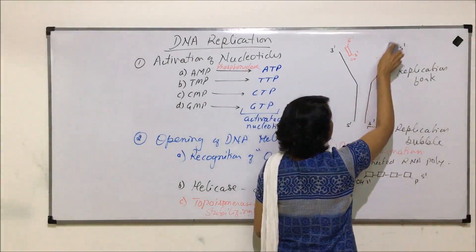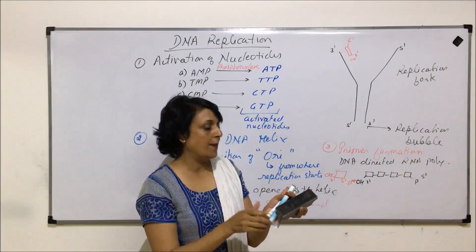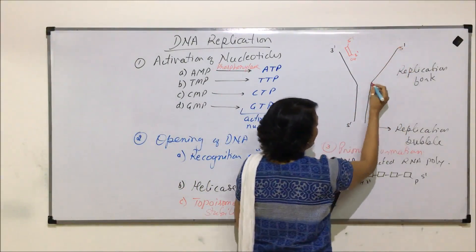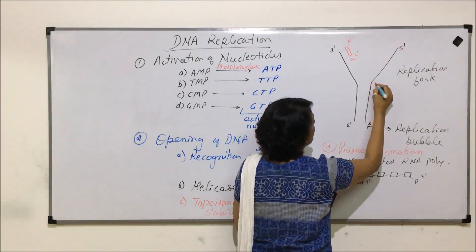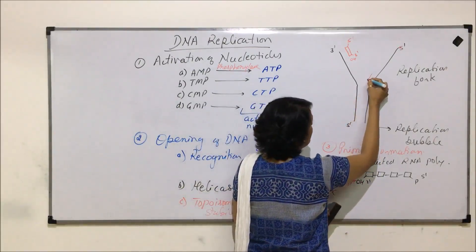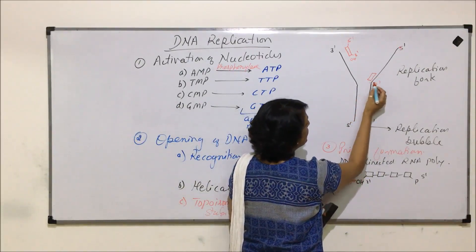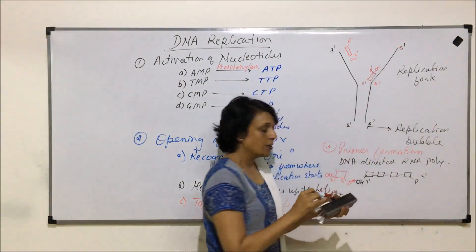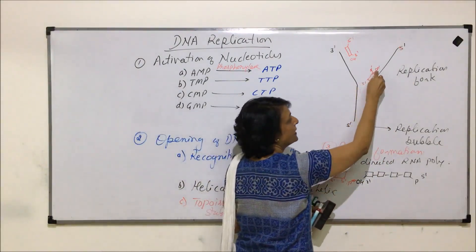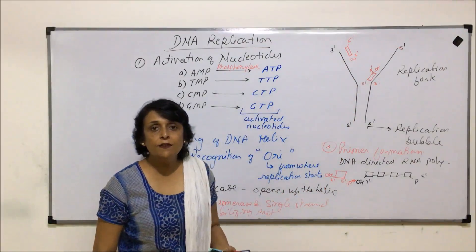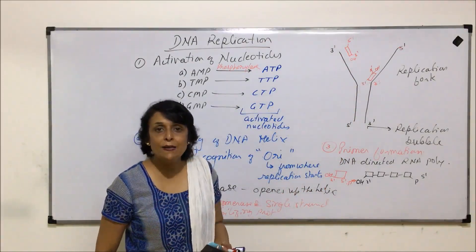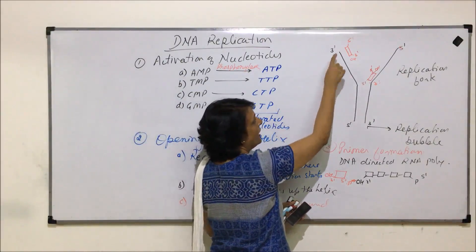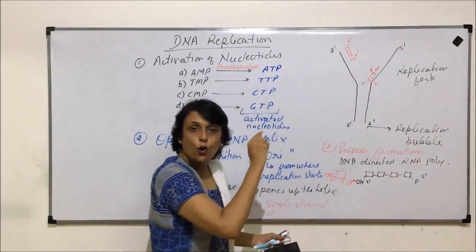The primer should form at the base of the opened-up DNA fragment. For this opened-up part, one end is 5 prime and the other is 3 prime. The RNA primer forms in front of the 3 prime end of the template, with its own 5 prime end adjacent and 3 prime OH free. This means the primer is always formed in front of the 3 prime end of the parent strand.